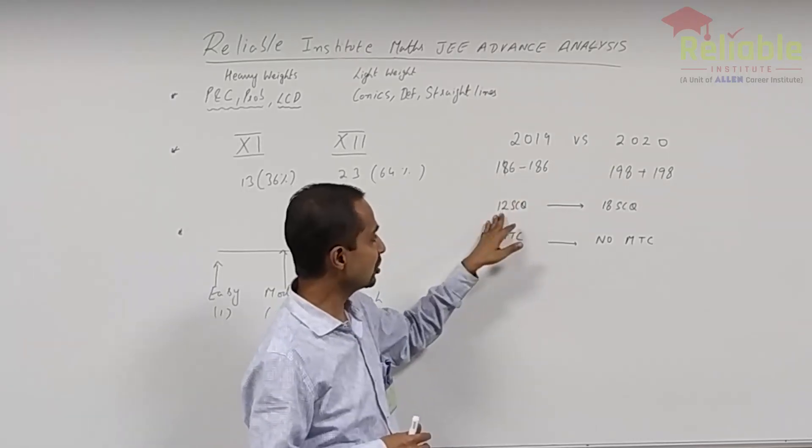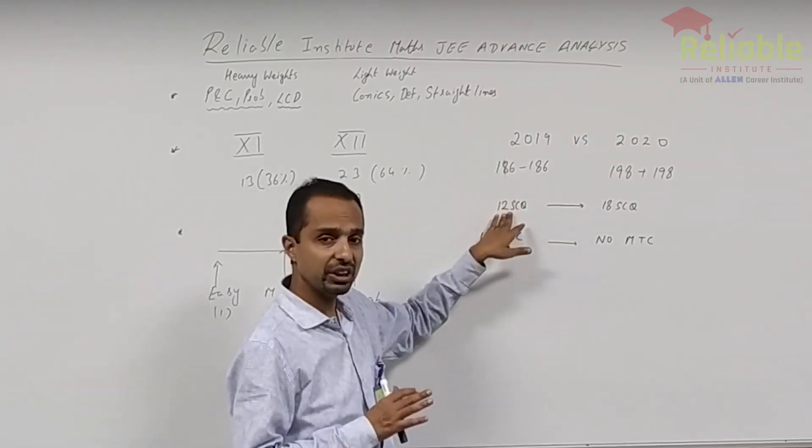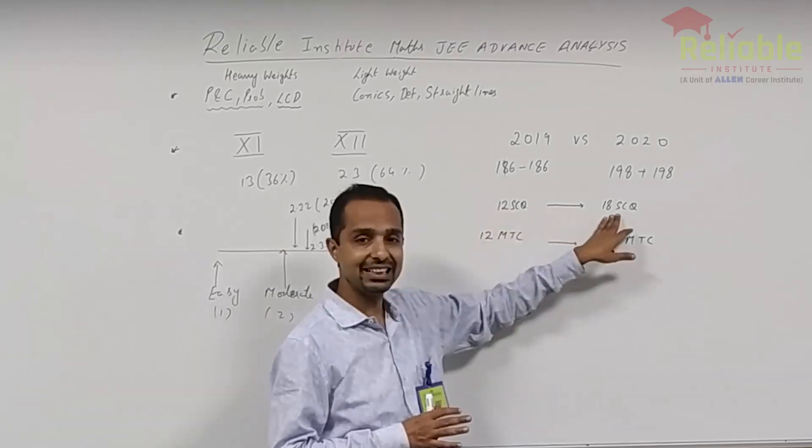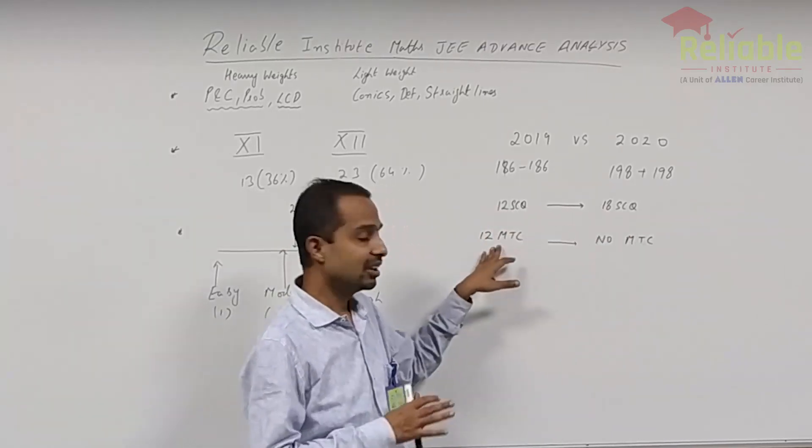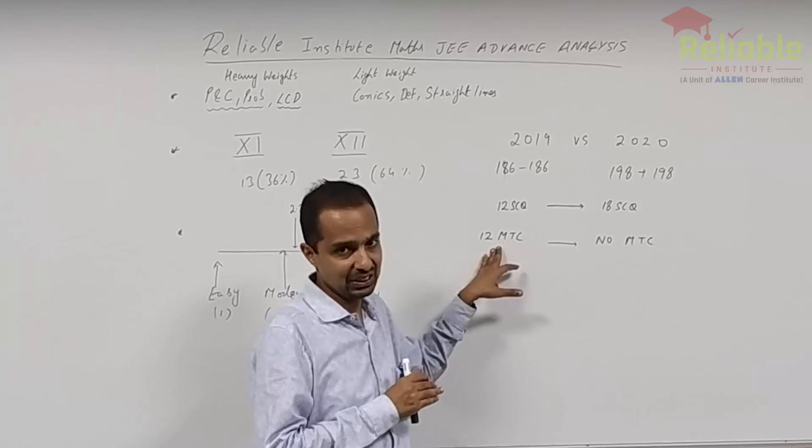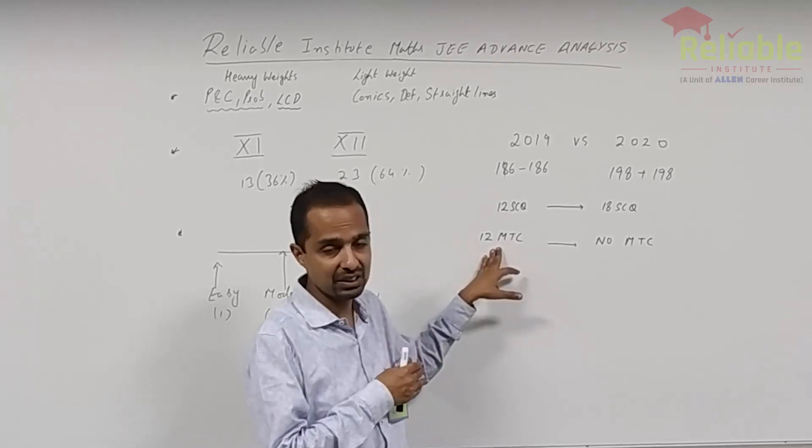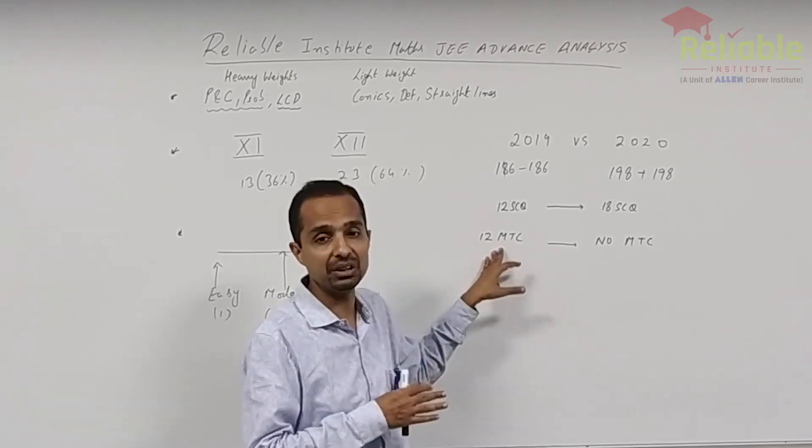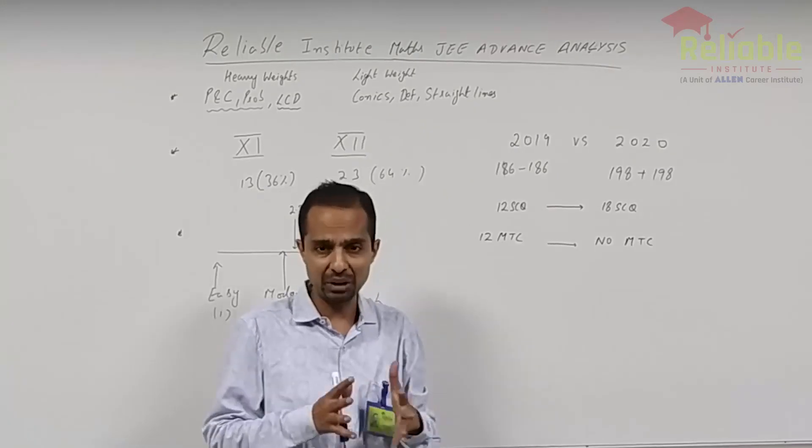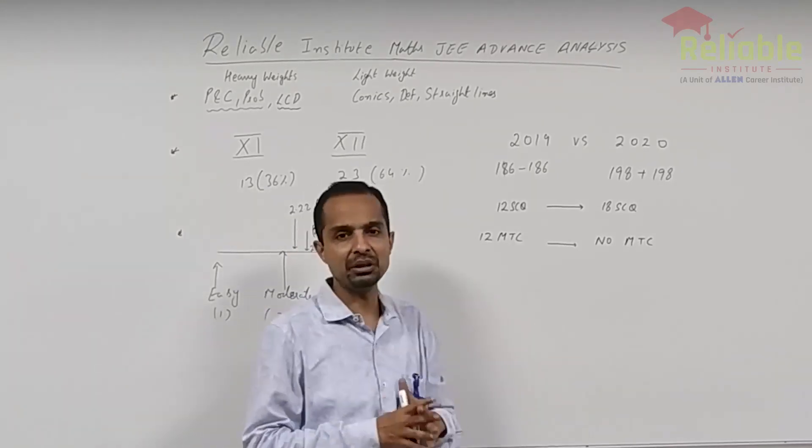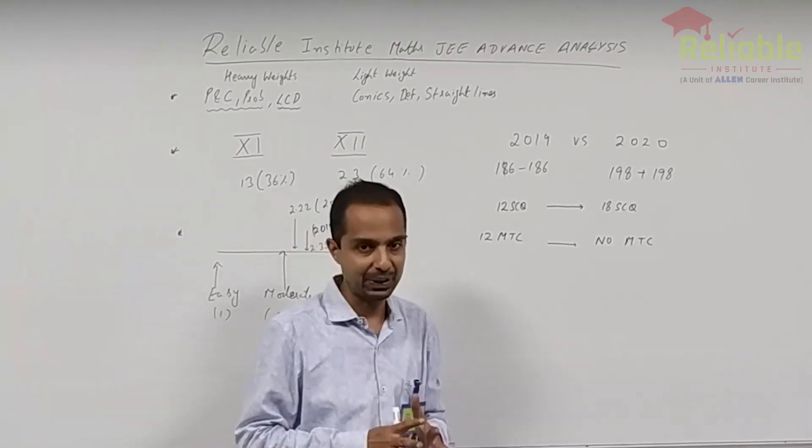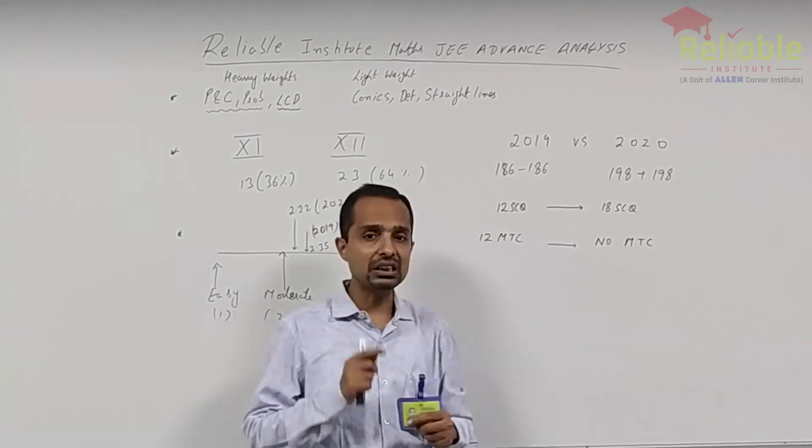This year, there were 12, in 2019 only 12 SCQs were there. This year 18 SCQs were there. And there were no MTC this year. Initially, that is previous year in 2019, there were 12 MTCs in Physics, Chemistry, Maths per column. And this year, match per column did not find any place.